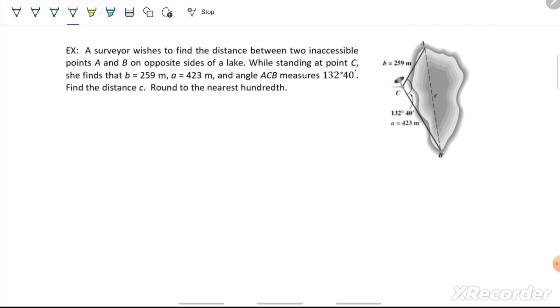In our next example, a surveyor wishes to find the distance between two inaccessible points A and B on opposite sides of a lake. While standing at point C, she finds that side B is 259 meters and side A is 423 meters. And the angle ACB measures 132 degrees, 40 minutes. We want to find our distance C.